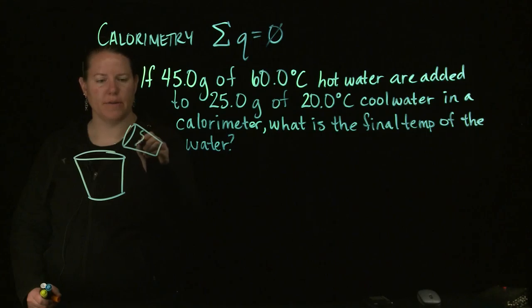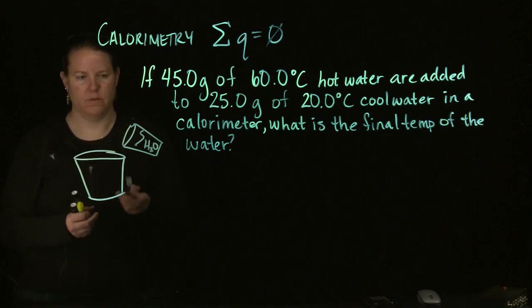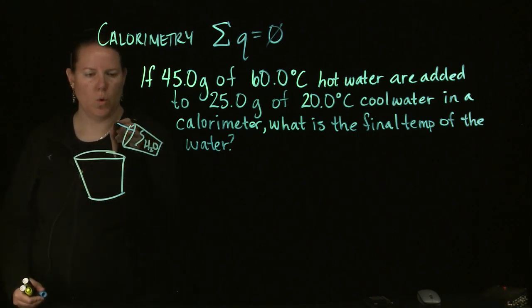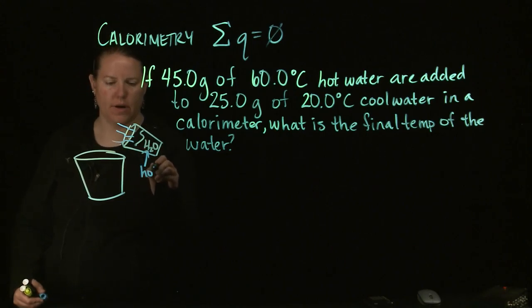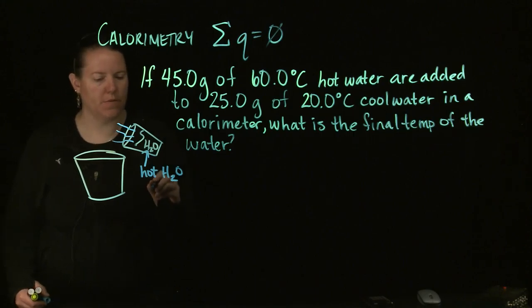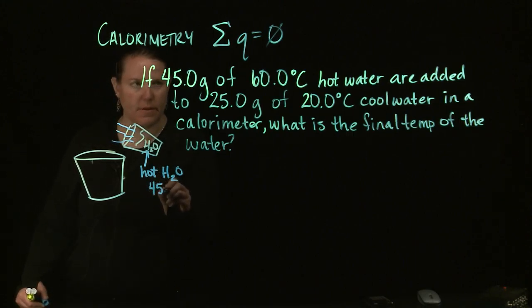Alright, so what am I doing here? You got hot water. This is water that's hot. Maybe we'll make some steam coming off of it. That's hot water. And we have 45 grams of that. And it's 60 degrees Celsius.